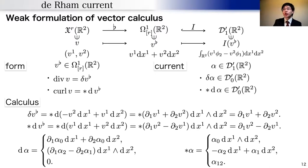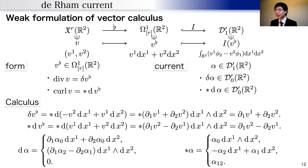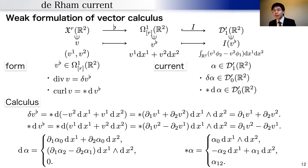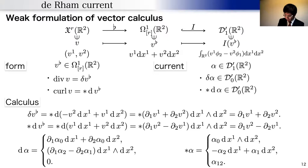We now apply the basic notion of currents to the weak formulation of vector calculus. The weak formulation in terms of currents is performed via differential forms. To weakly formulate vector calculus in terms of currents, it is necessary to first write them in terms of differential forms. The differential form corresponding to a vector field is called the velocity form. Divergence and curl operators can be written in terms of the velocity form, and we define divergence and vorticity for a current by simply replacing the velocity form with a current.